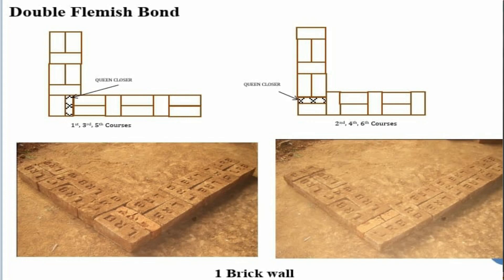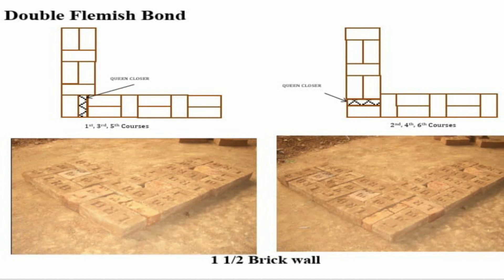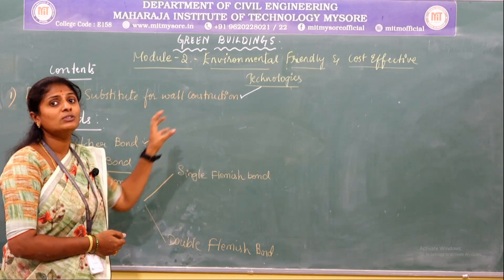In the double Flemish bond figure, you will come across one brick thick wall and one and a half brick thick wall images. In the one brick thick wall, odd and even courses are considered; in the odd course, queen closers are placed vertically, but in the even course they are placed horizontally. Below this is the plan of brick arrangement for the one brick thick wall. For one and a half brick thick wall, arrangements are made such that both faces are Flemish, with queen closers placed in both odd and even courses.